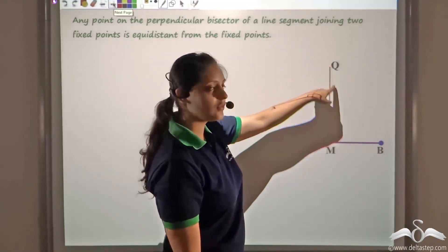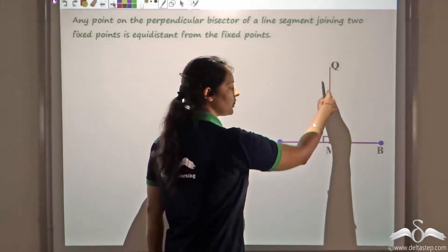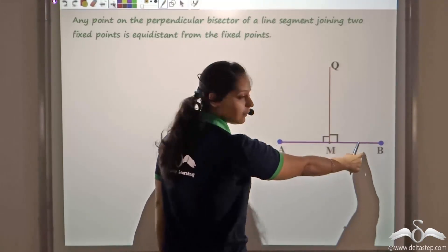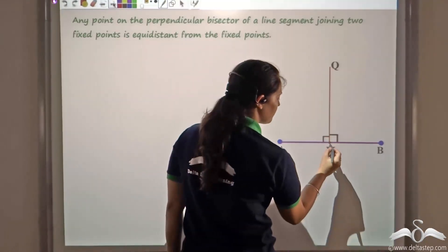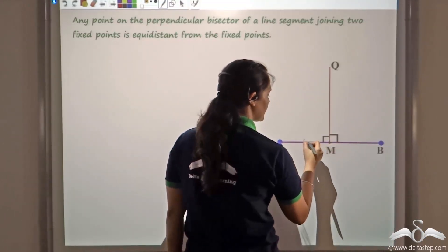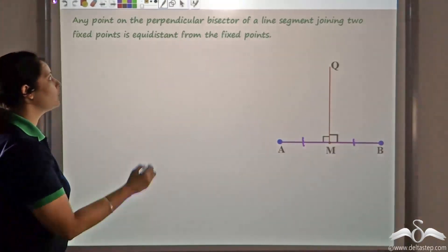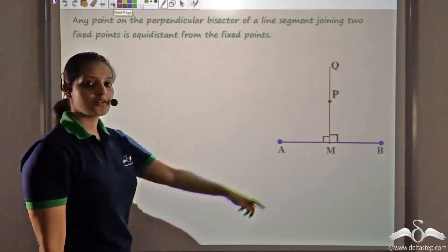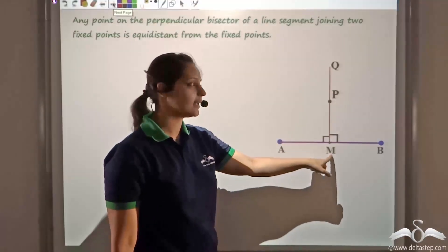Let us say that MQ is the perpendicular bisector of AB. That means it should be perpendicular to AB — so this is 90 degrees perpendicular to AB — and M is the midpoint of AB. So this point M is the midpoint of AB, that is AM is equal to MB. Now, let us consider a point P. This point P is any point which is on this perpendicular bisector MQ.